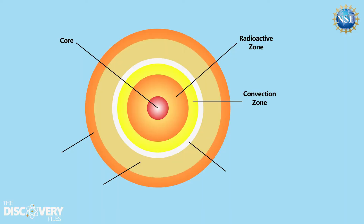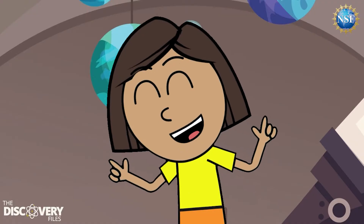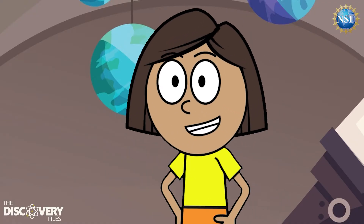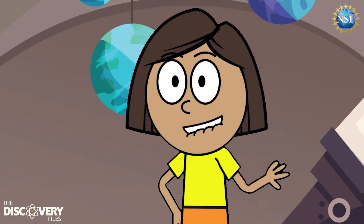Energy continues to travel out to the photosphere, the visible surface of the Sun. Above that is the chromosphere and the corona, which stretches five million miles around the Sun, where space weather comes from.